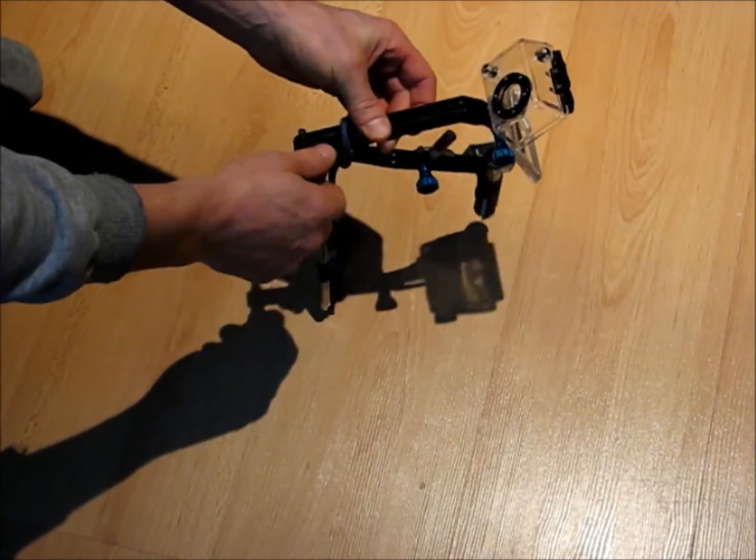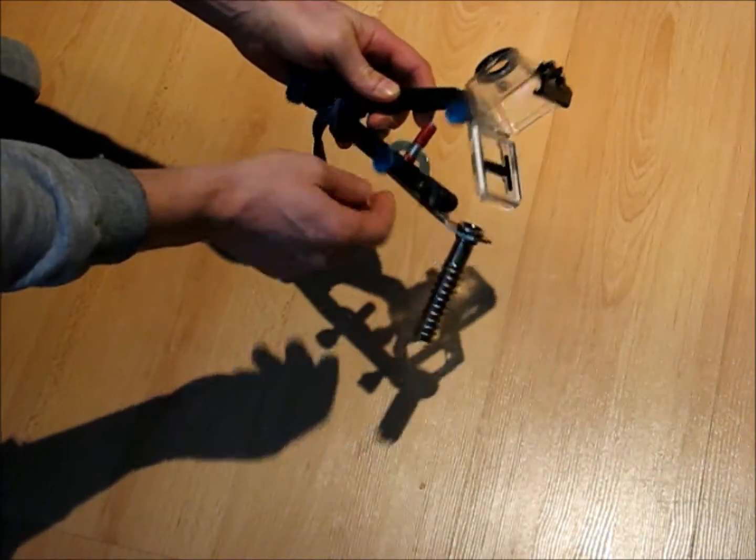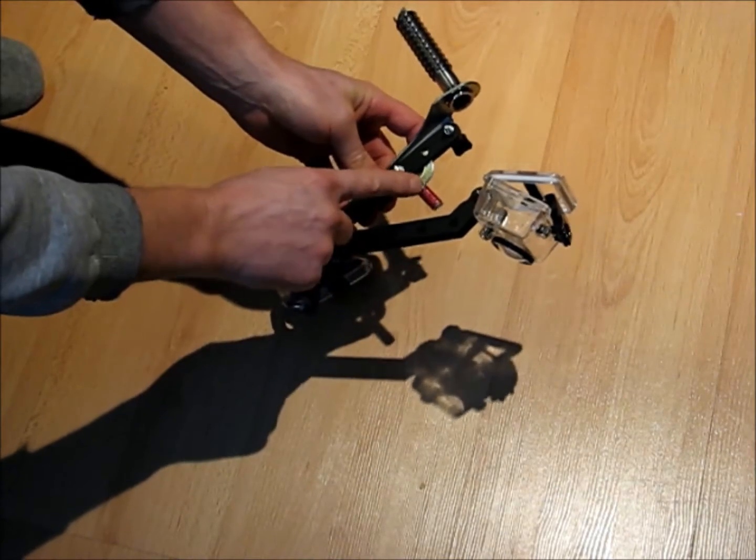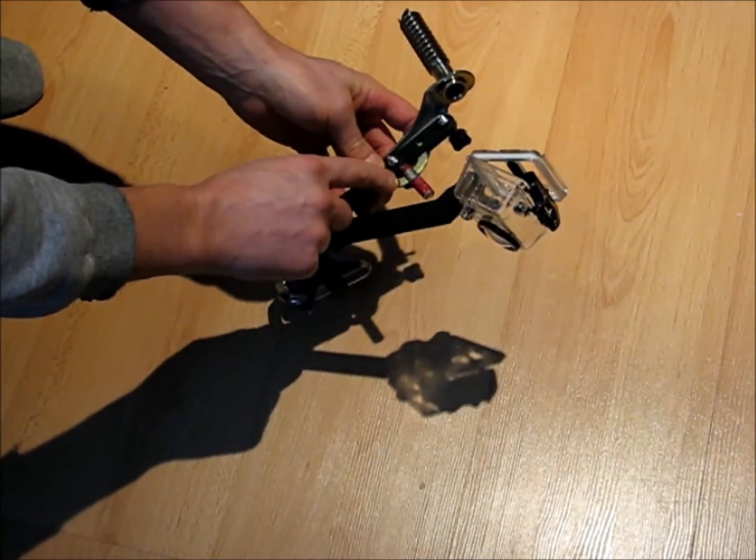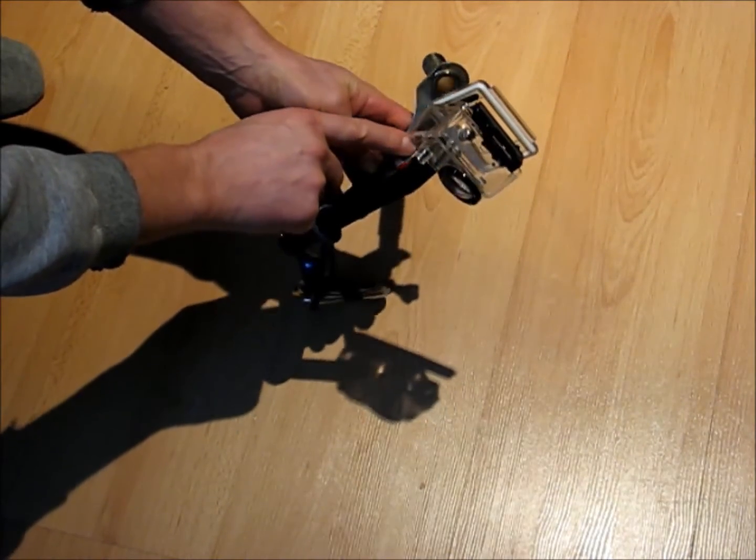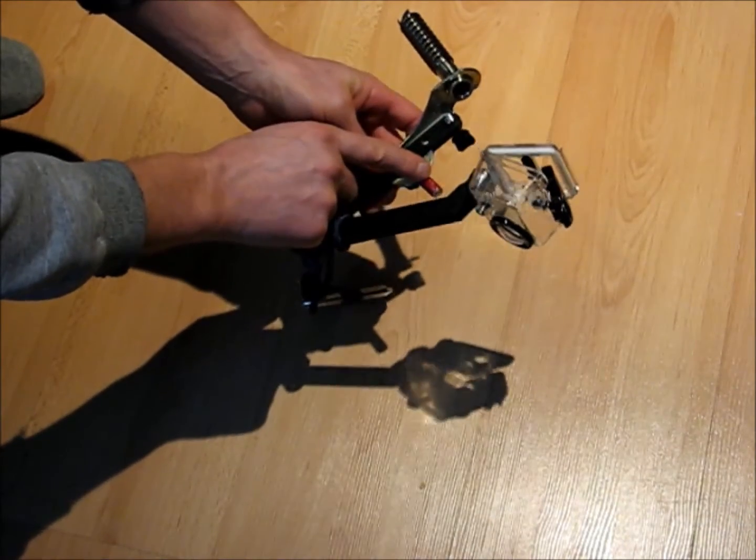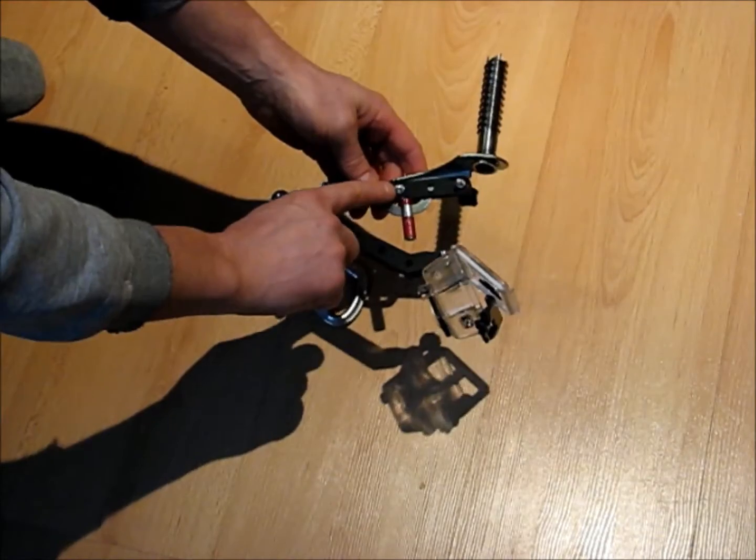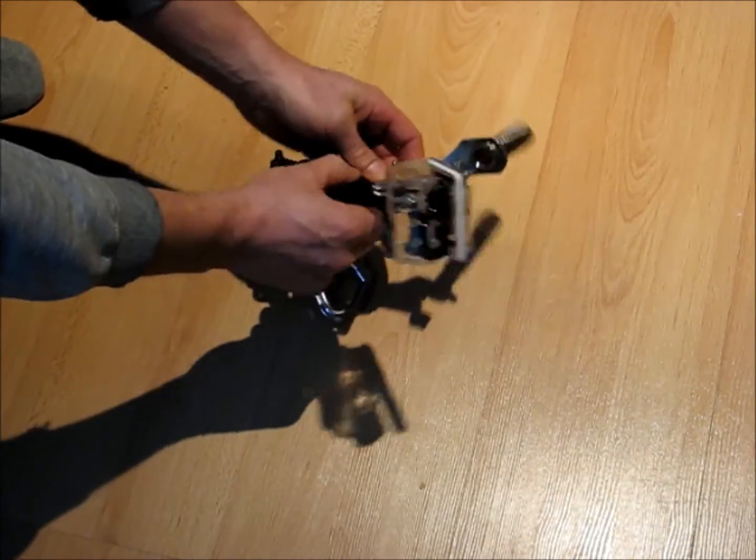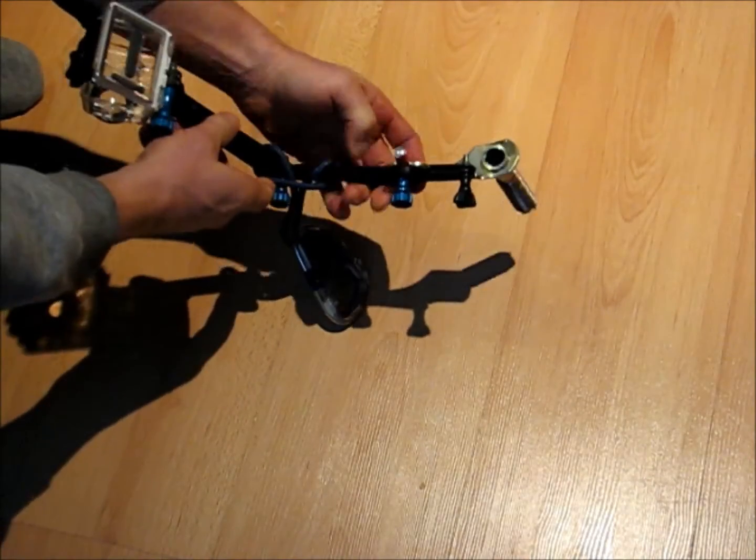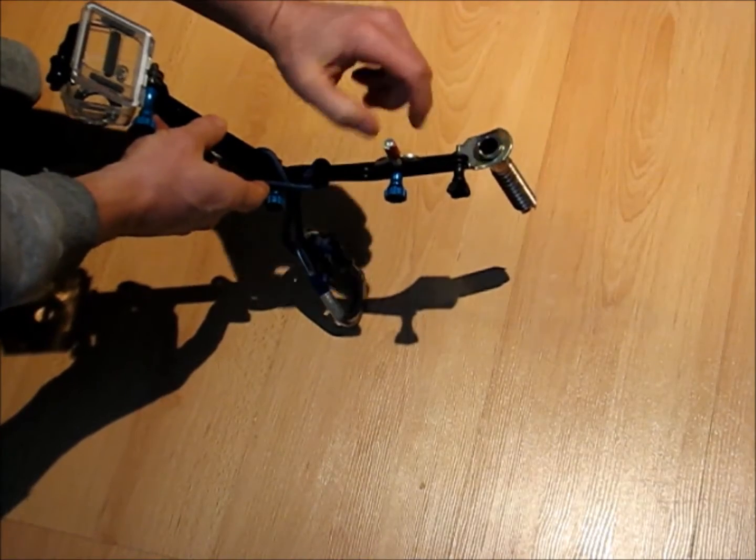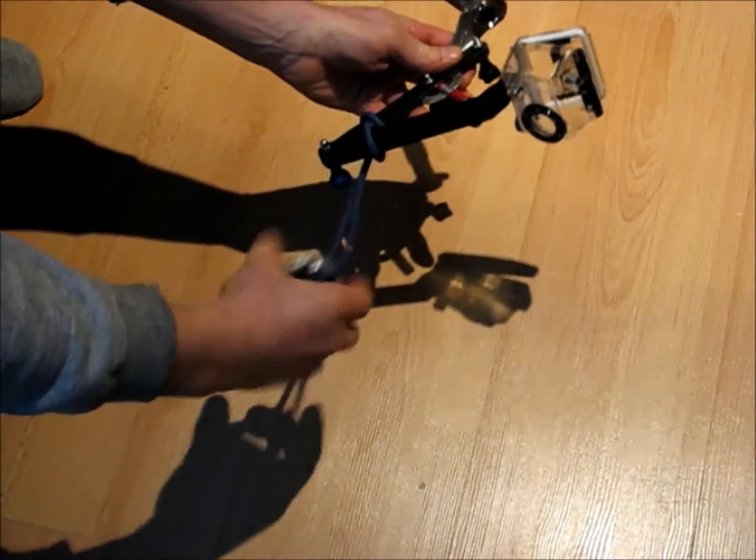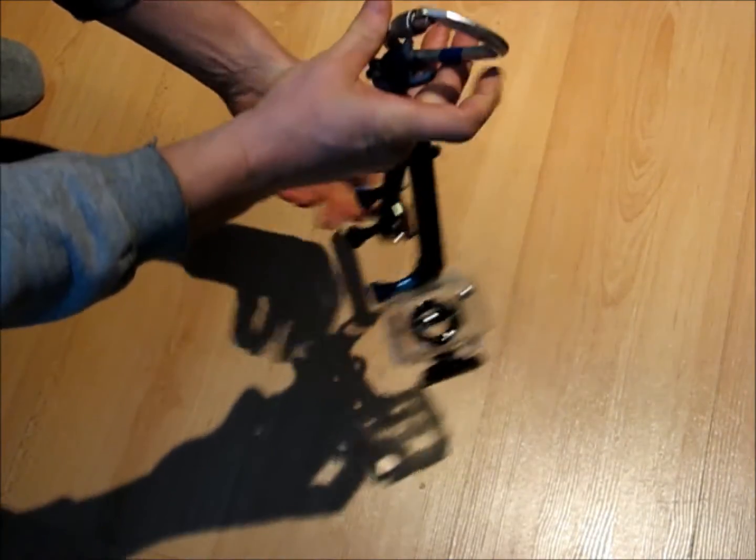They are pretty handy. Mount the GoPro to it. I got a Black Diamond turbo ice screw, and all I've done is bolted it between the two bottom bars and carried it on a carabiner.